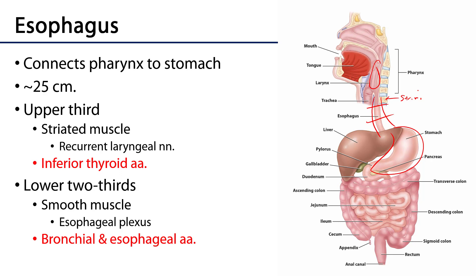The distal two-thirds would consist of smooth muscle under the control of the esophageal autonomic plexus and supplied by blood by bronchial and esophageal arteries.